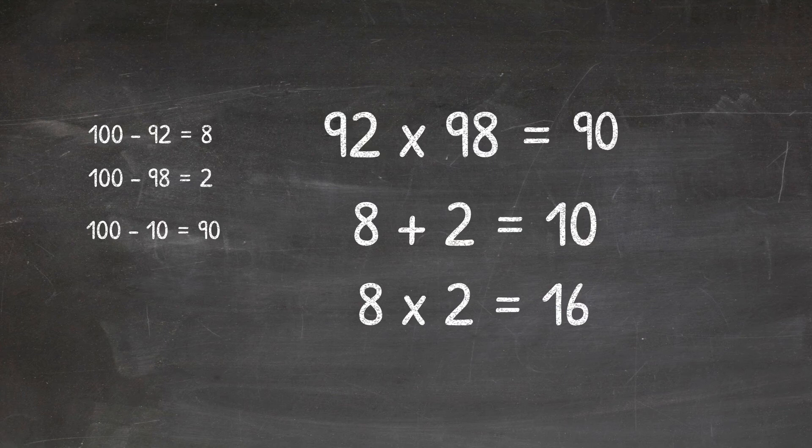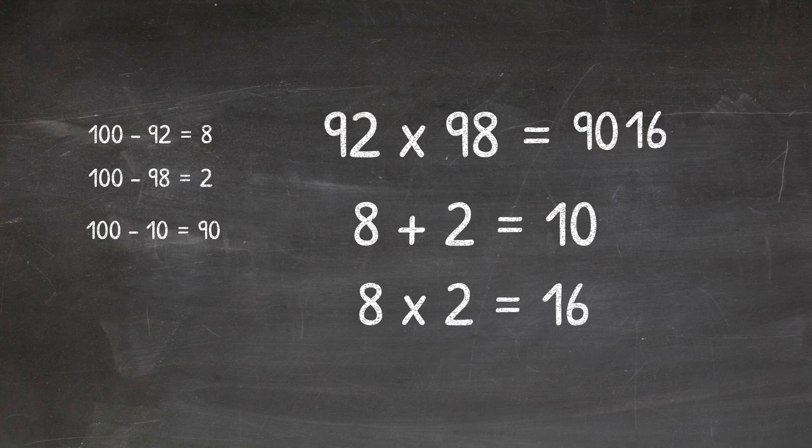Now this is where our second bit of magic happens because that 16 is our second two digits of our answer. So 92 times 98 equals 9,016.